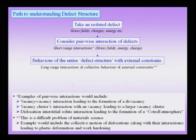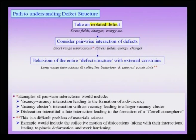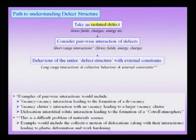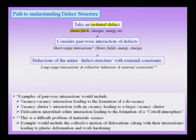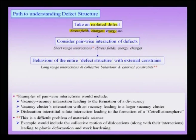To simplify this problem, I can initially take an isolated defect — a single interstitial atom, a single edge dislocation, or a single precipitate in a crystal. Associated with these defects are important quantities like the stress field, any charges associated with the defect, and the energy of the defect. Understanding an isolated defect simplifies my problem of understanding the larger picture of defect structure.